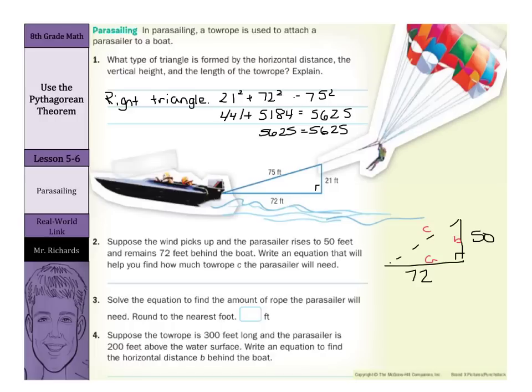When we look here, we have our sides A and B that are our legs of this triangle and our side C, which is the tow rope, the hypotenuse. And so, we'll have 50 squared or 72 squared. It doesn't matter what you write first with the legs. But 50 squared plus 72 squared is going to equal C squared.